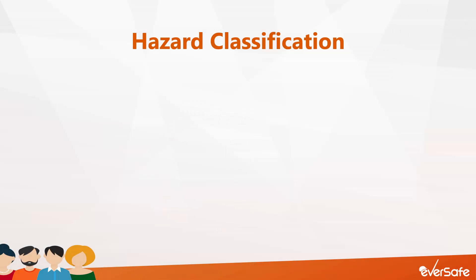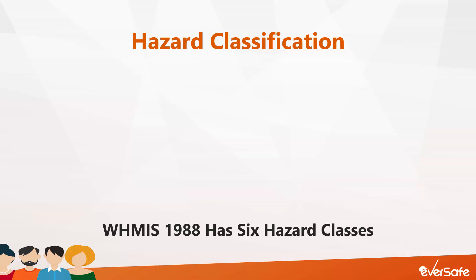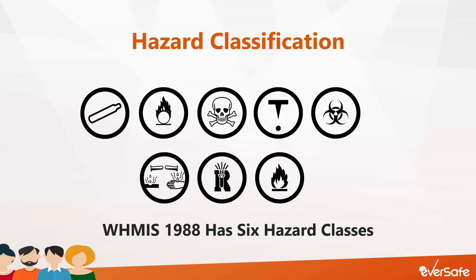In WHMIS 1988, there are six hazard classes, and they're represented by eight symbols — eight because one of the hazard classes has three subclassifications. Sometimes workers were confused by this and actually thought that there were eight classes.